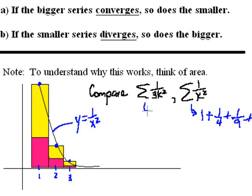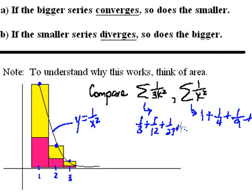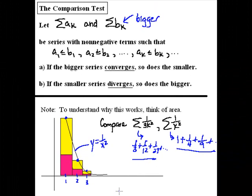By comparison, 1 over 3k squared is going to always be smaller — 1 third the size. So the areas in pink represent 1 third of 1 over k squared, or in other words 1 over 3k squared, giving us 1 third, 1 twelfth, 1 27th, and so on. We know that 1 over k squared converges because it's a p-series with p greater than 1. So it just makes sense that if the areas of the larger rectangles are small enough to converge, then so must the area of the smaller rectangles. Similarly, if you know the smaller series diverges, then there's no way the larger rectangles could have a small enough area to still converge.